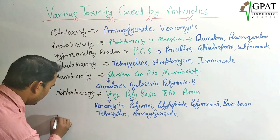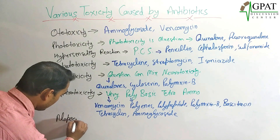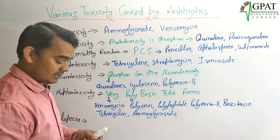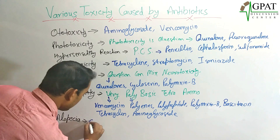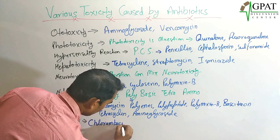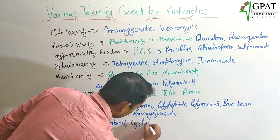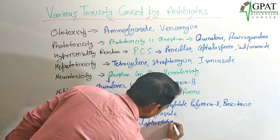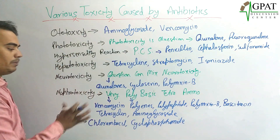There is another adverse toxicity — alopecia. Alopecia means baldness. Chlorambucil and cyclophosphamide are anti-cancerous drugs which cause alopecia.